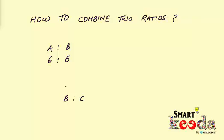The terms of the second ratio are 3 is to 4. Now, what will be the combined ratio? You need to find the answer in less than 10 seconds — your time starts now.